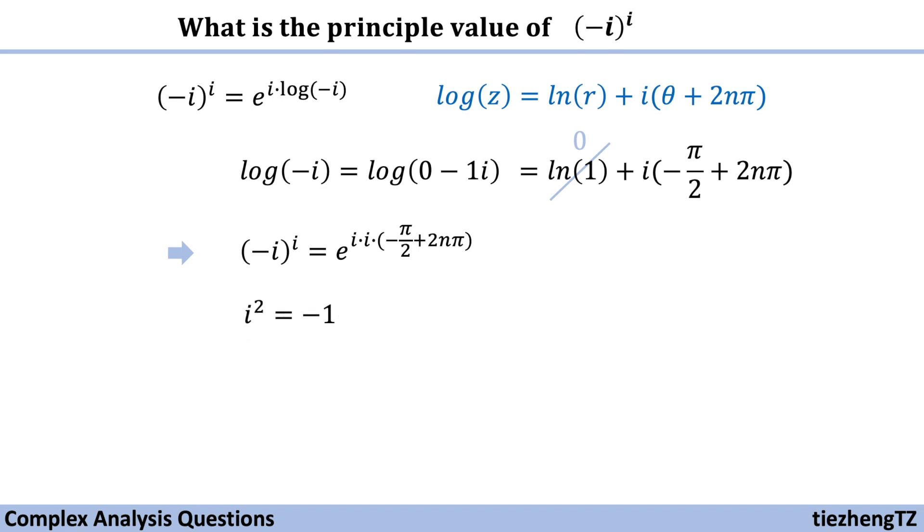We know i² = -1, so we can further simplify the equation to (-i)^i = e^(π/2 - 2nπ).